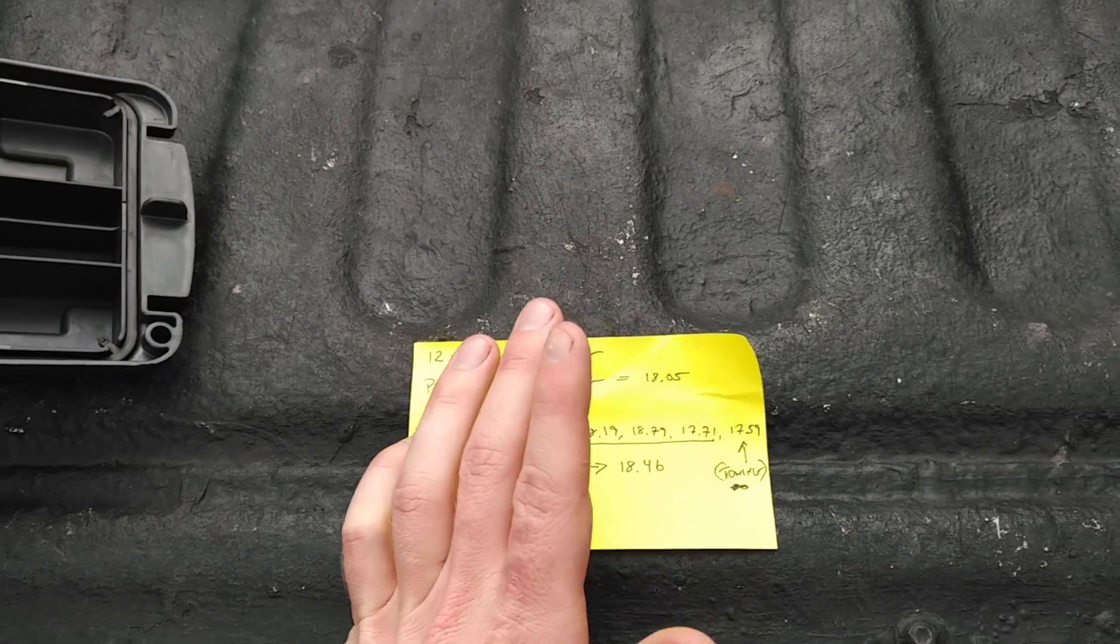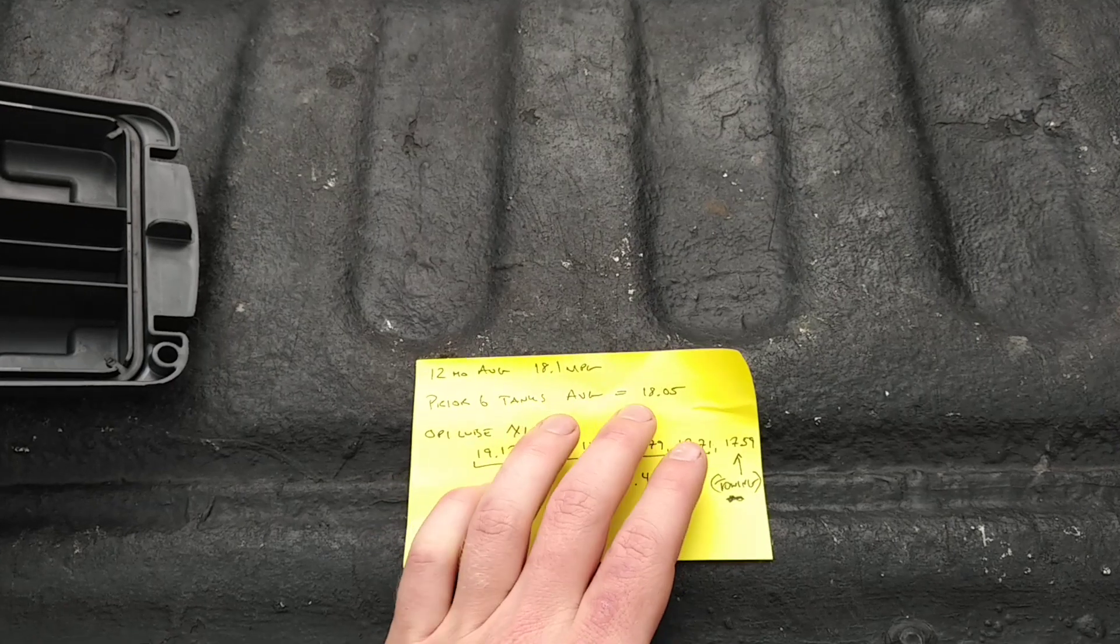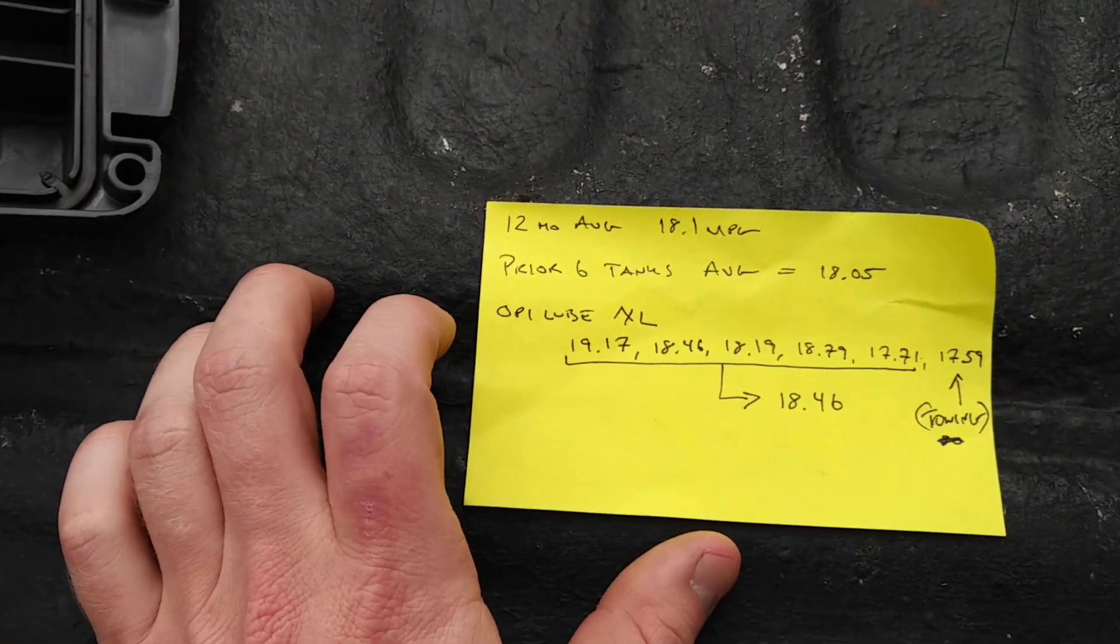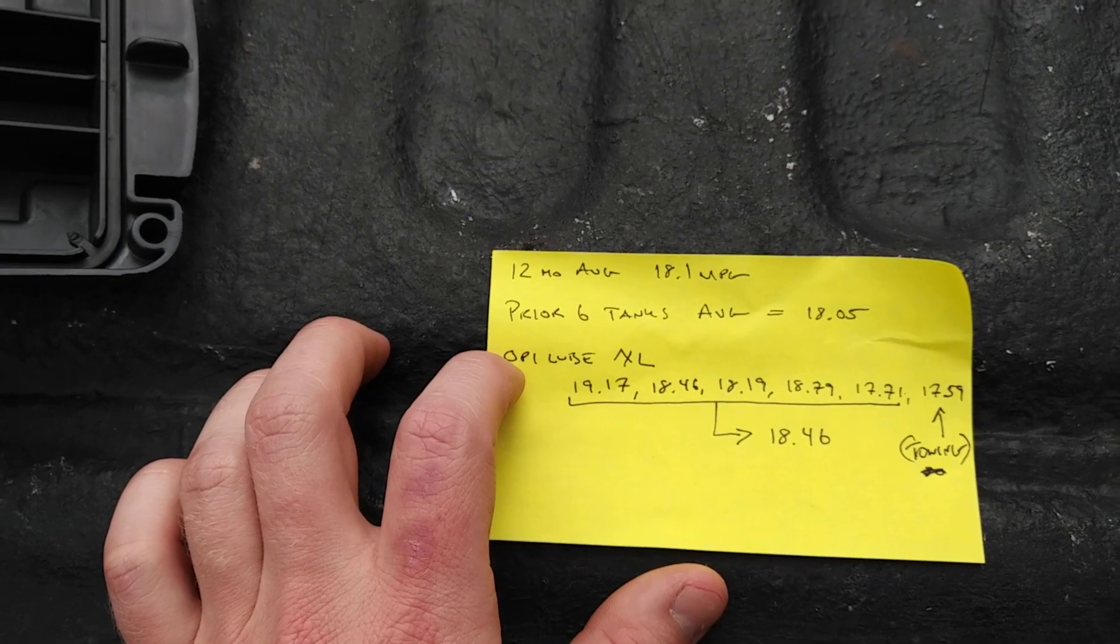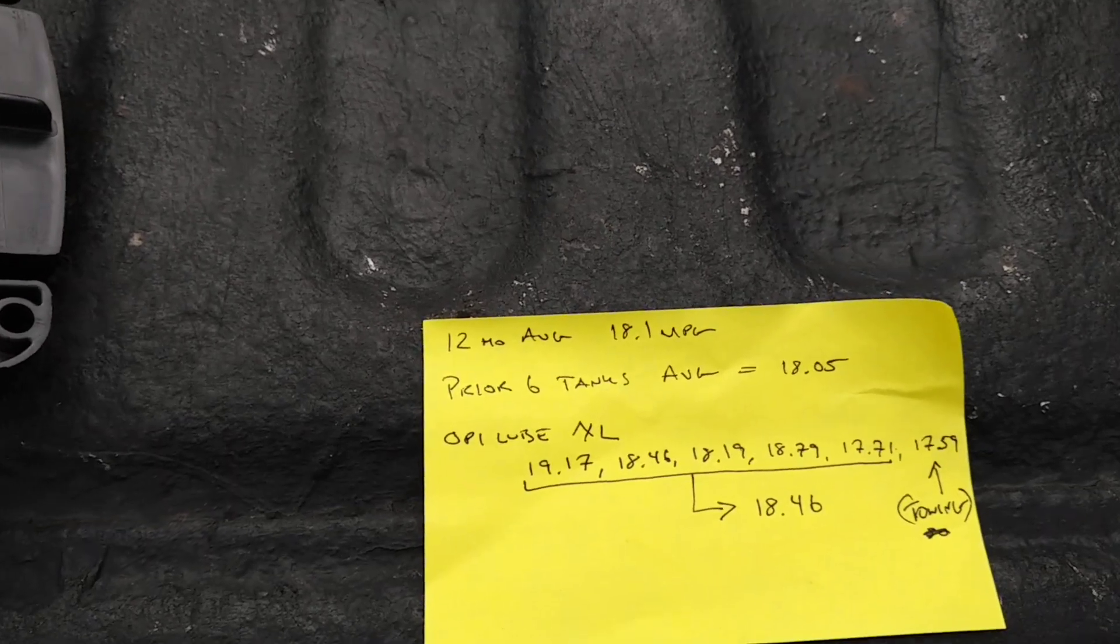Those tanks were largely in the month of January, February, the coldest month of the year here. Granted the weather was in the 60s and 70s in the day, not very cold but colder than 90s that we normally have. 18.05 was the result there, so we were a little bit below the 12 month average.